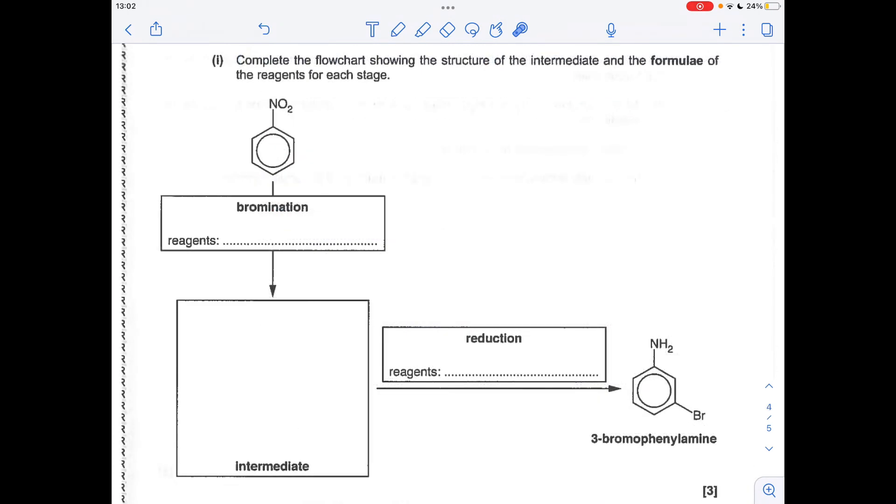Moving on to the flowchart now, we've got a bromination step and a reduction step. The bromination step substitutes a hydrogen for the bromine. This is brought about by reacting the nitrobenzene with bromine in the presence of a halogen carrier catalyst. You can use either AlBr3 or FeBr3, which creates this intermediate here.